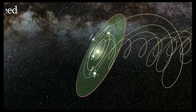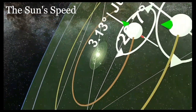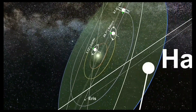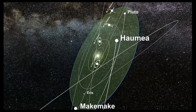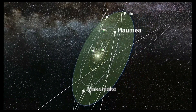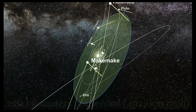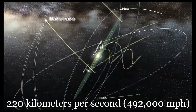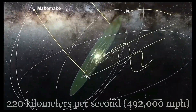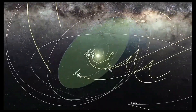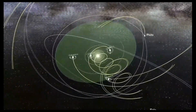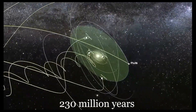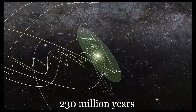The Sun's speed depends on what kind of motion we're considering. Orbiting the Milky Way: our Sun travels around the center of the Milky Way galaxy at a speed of about 220 kilometers per second (492,000 miles per hour). This is a colossal speed, but due to the Milky Way's vast size, it takes the Sun roughly 230 million years to complete one full orbit.